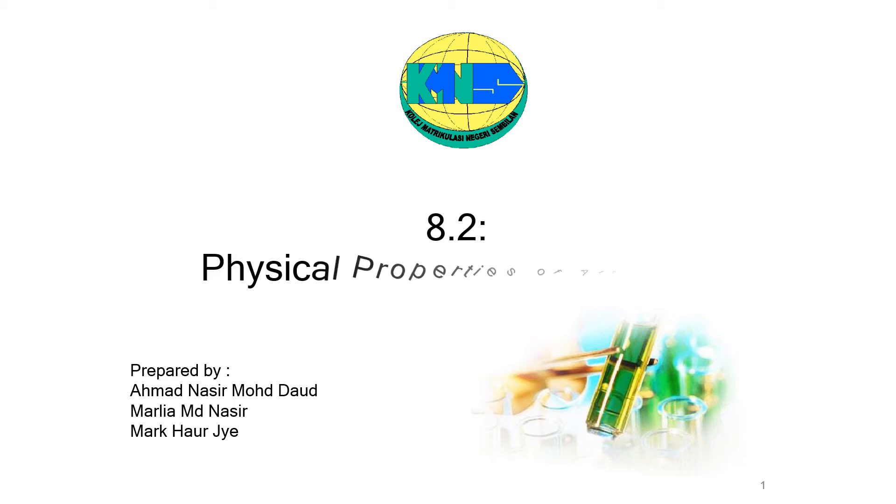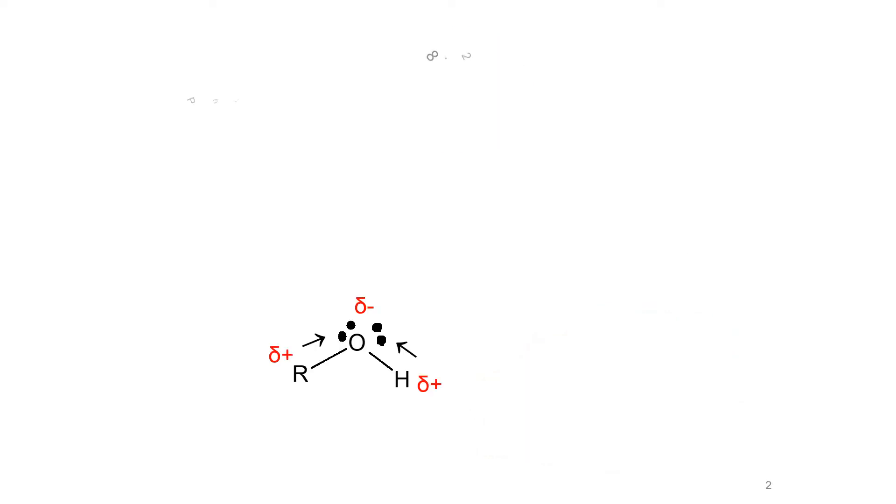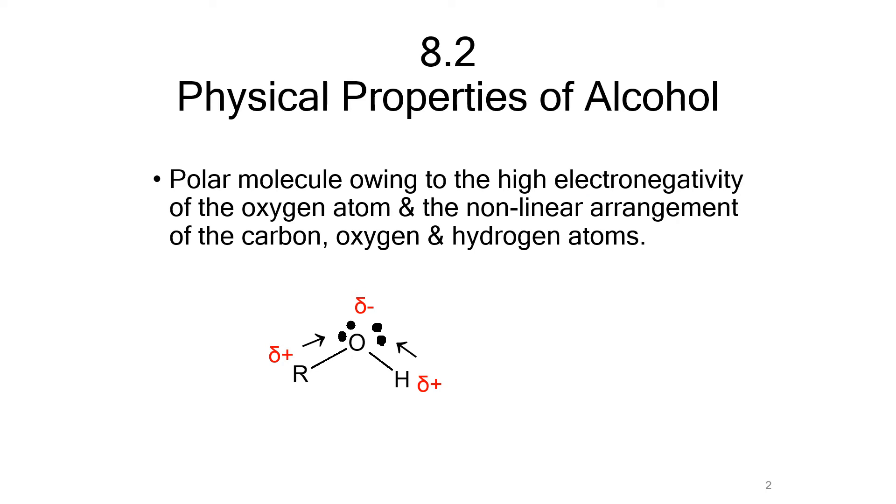At point 2, physical properties of alcohols. Alcohols are polar because of the high electronegativity of the oxygen atom and the non-linear arrangement of the carbon, oxygen and hydrogen atoms.